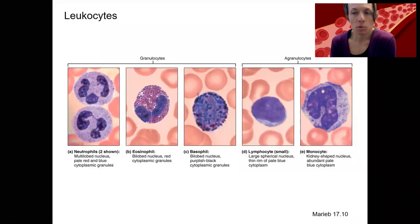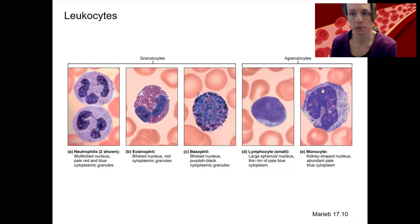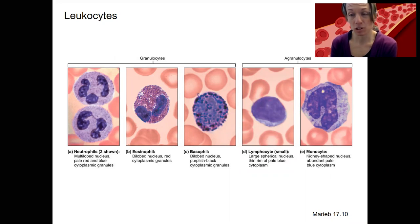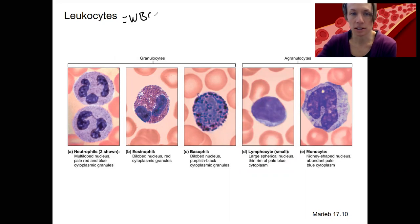Continuing on, we've got some more formed elements to talk about in detail. Leukocytes are another type of formed element, and they collect in that buffy coat in the middle when you spin down whole blood. The first way to categorize leukocytes: first of all, they're all immune cells. Another term for leukocytes equals white blood cells.